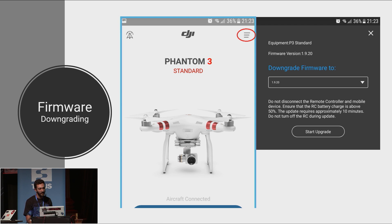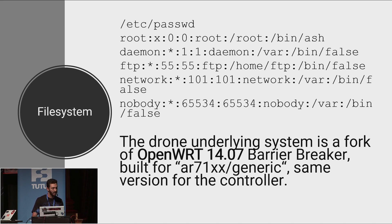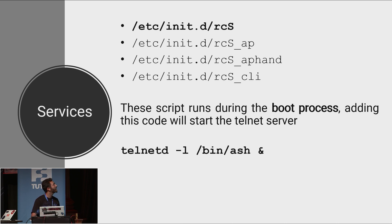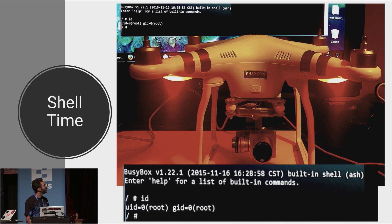After downgrading the firmware, the FTP service was no longer limited. As root I was able to access the entire file system, which I copied and began analyzing again. The specific system DJI uses for this drone is a fork of OpenWrt called Barrier Breaker, also full of custom DJI binaries. I found scripts running at boot time holding network configuration for Wi-Fi settings. Using one of those commands I was able to reactivate Telnet and finally get root on the aircraft.